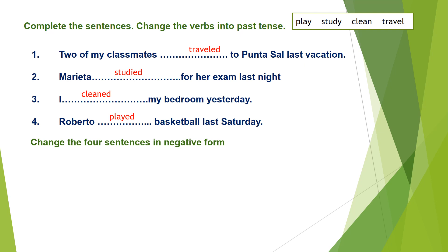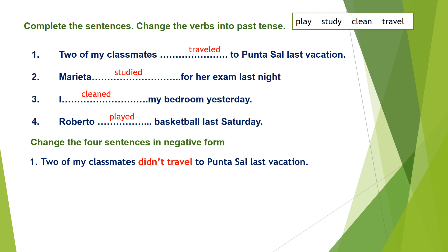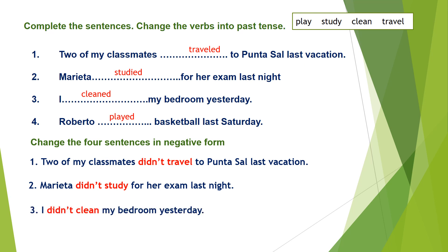Now change the four sentences into negative form. Number one: Two of my classmates didn't travel to Punta Sal last vacation. Number two — Excellent! Marietta didn't study for her exam last night. Number three — All right! I didn't clean my bedroom yesterday. Number four: Roberto didn't play basketball last Saturday.